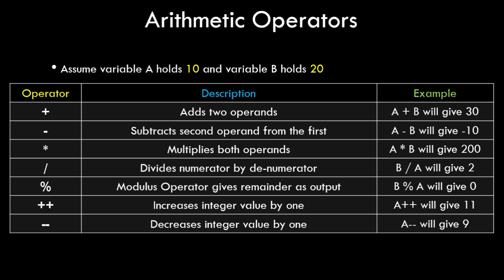The last two arithmetic operators are called unary operators because they operate on a single variable. The increment operator (a++) increases the integer value by 1 — so if a is 10, a++ makes it 11. The decrement operator (a--) decreases the integer value by 1 — so if a was 10, it becomes 9.